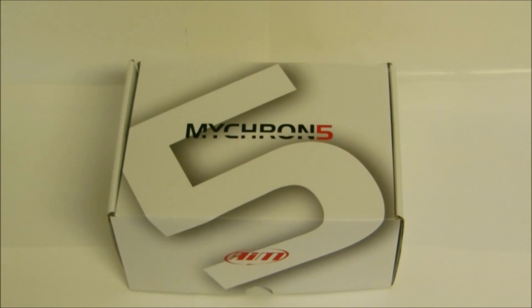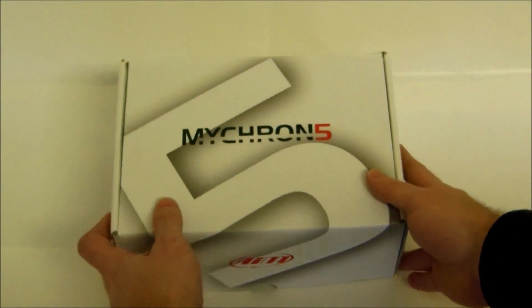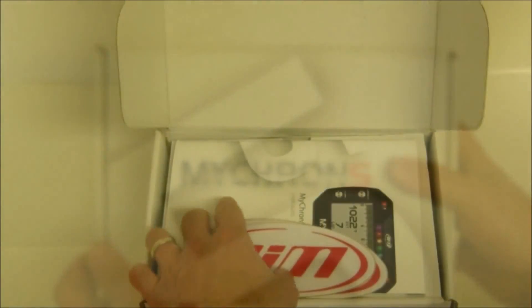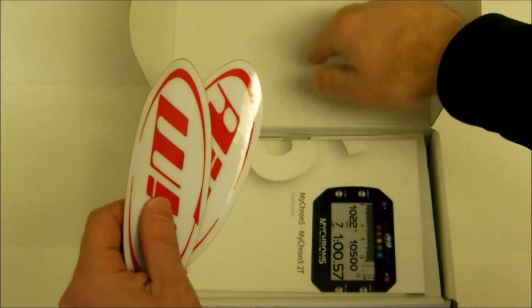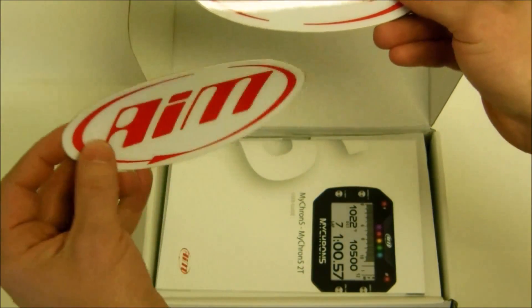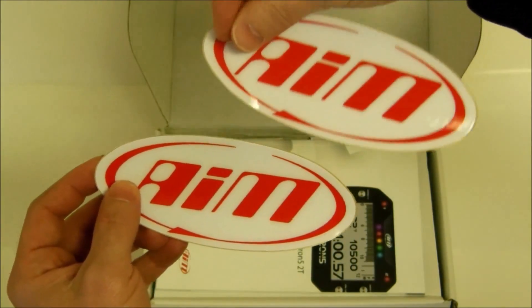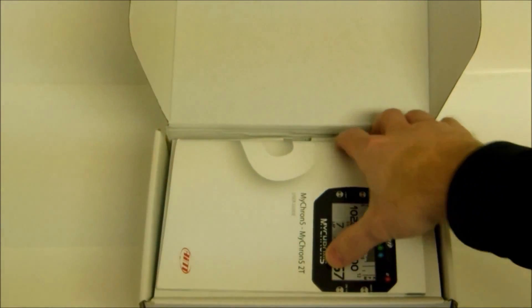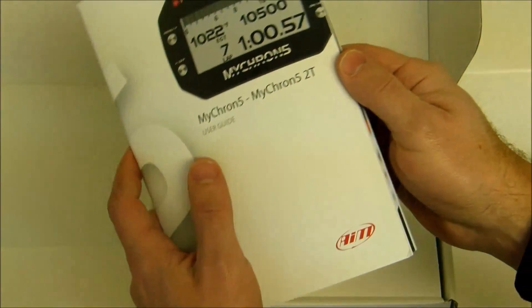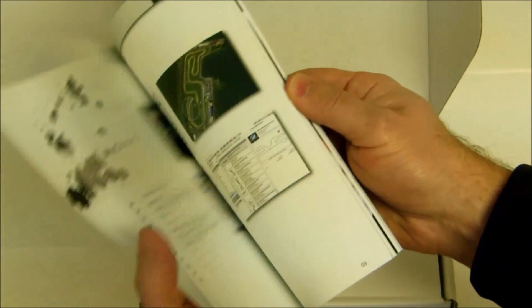Today we are unboxing a Mychron 5 from AIM. In the box you'll receive a couple of stickers for your cart bodies and whatnot. You'll also get this full color paged manual that is very easy to read and follow.